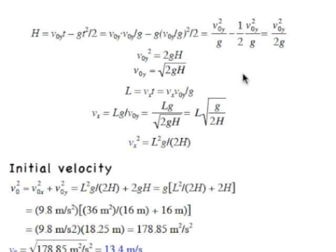This expression, h equals v naught y squared over 2g. You can multiply both sides by 2g, get v naught y squared equals 2gh. V naught y, then, is just the square root of 2gh.